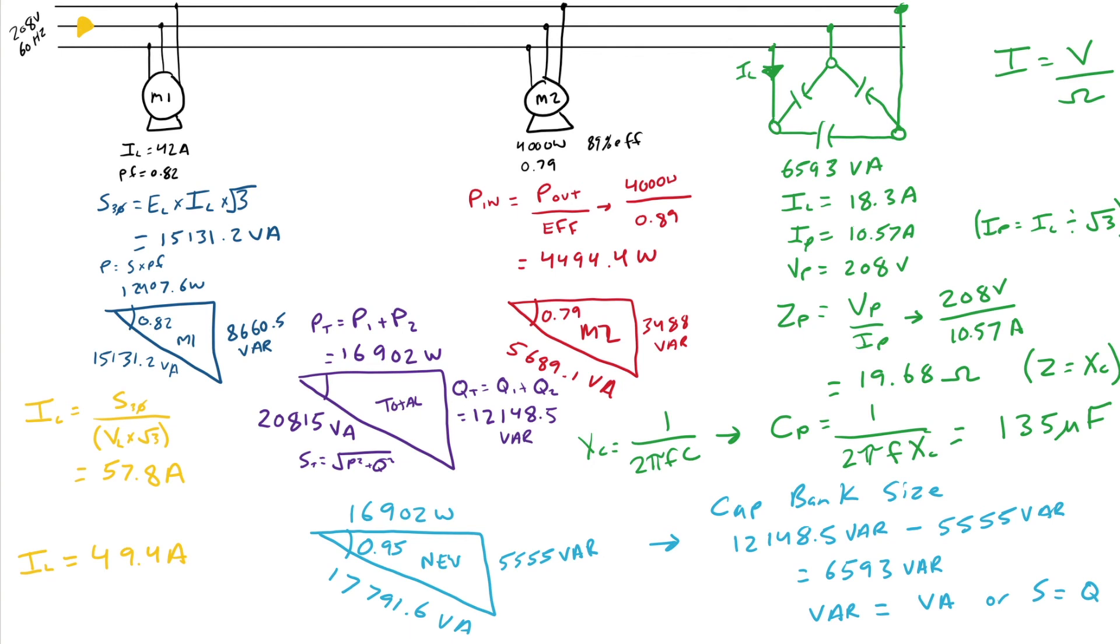So, I do have another video, which I'll link as well, talking about what's the difference between connecting them up in Y or delta. But I just wanted to run through this calculation here on a three-phase power factor correction circuit. So, hopefully this helped. And thank you so much for watching.